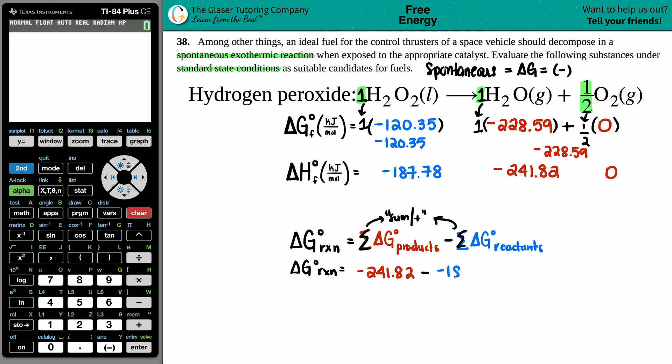So delta G for the whole entire reaction would be products negative 241.82 minus reactants which is negative 187.78. Calculator time: negative 241.82 minus a negative 187.78. Let's see what we get. So we get a delta G for the whole entire reaction of being a negative 54.04 kilojoules. Now we have to analyze this value because we don't really care about the actual quantity, we just care about whether it's spontaneous. And we did say that it being spontaneous, the delta G has to be a negative value, and there it is. So this would be spontaneous. So this decomposition passes the first test, it is a spontaneous reaction.